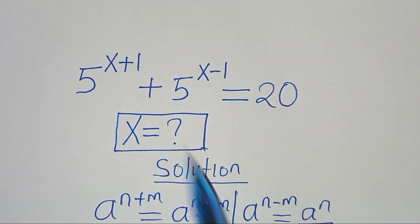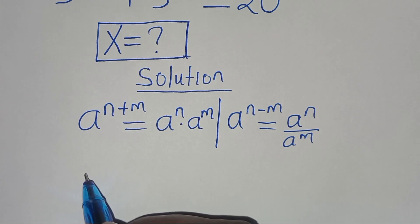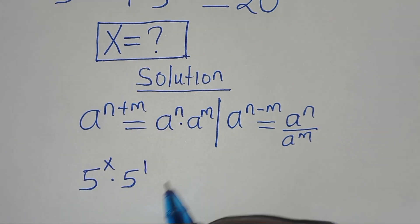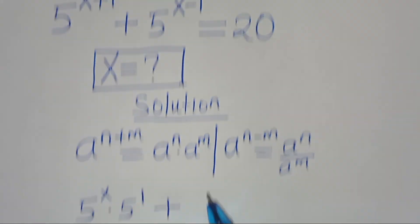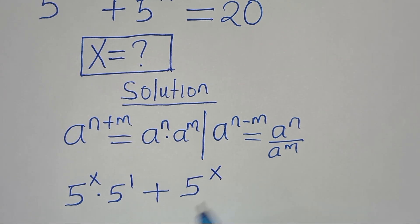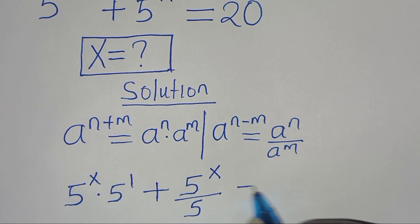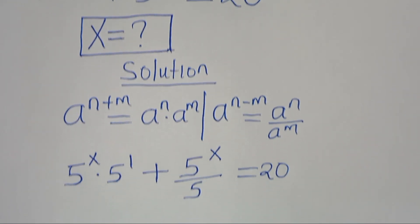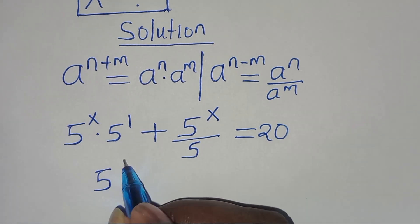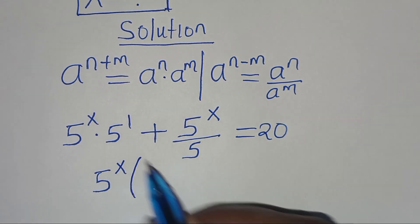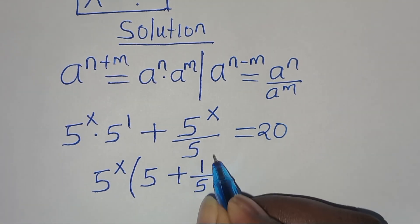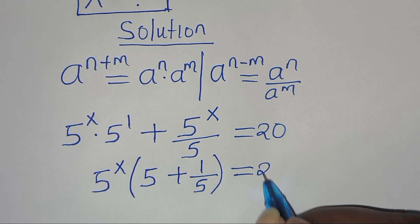5 to the power of x plus 1 can be expressed as 5 to the power of x multiplied by 5 to the power of 1. Then plus 5 to the power of x minus 1, which can be expressed as 5 to the power of x divided by 5. This is equal to 20. Since 5 to the power of x is common, we can factor it out, giving us 5 to the power of x times (5 + 1/5) equals 20.